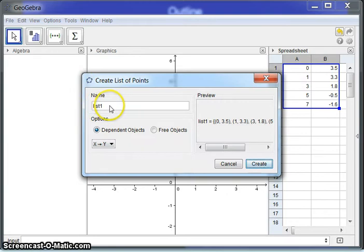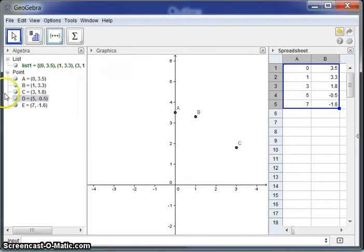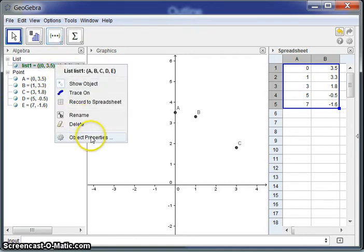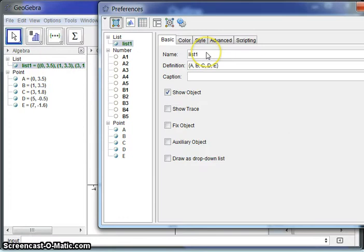And it'll give you an option to name the list of points that you would like. So, I'm just going to leave that as list1 and hit create. And now you can see here's list1. And you can see that that is, if I right-click that and ask for the properties, it just lists the name as list1. And here's the definition. It's basically the points, A, B, C, D, and E.